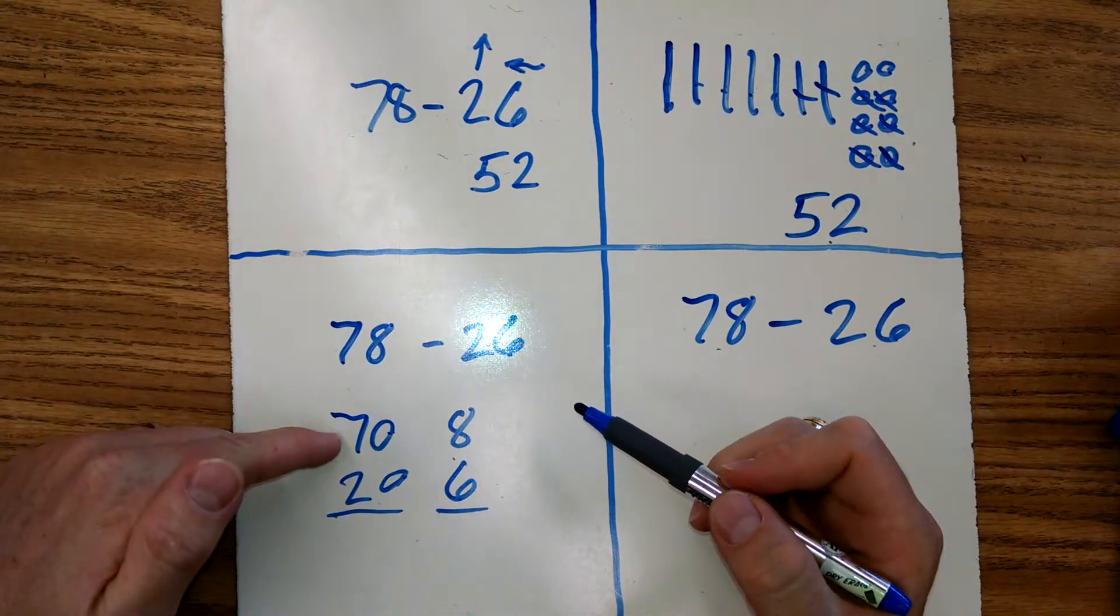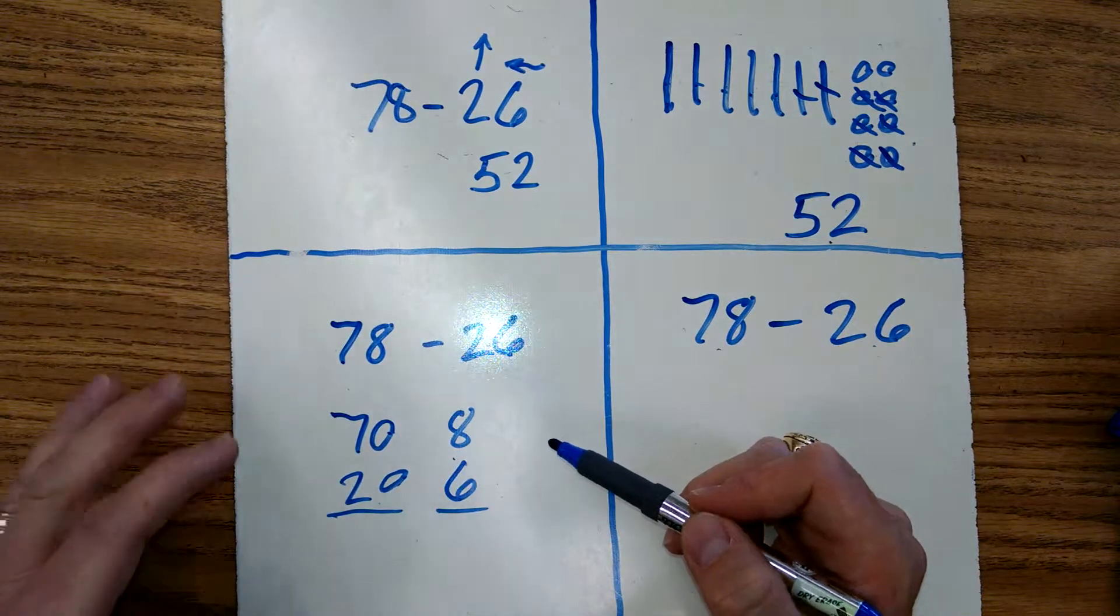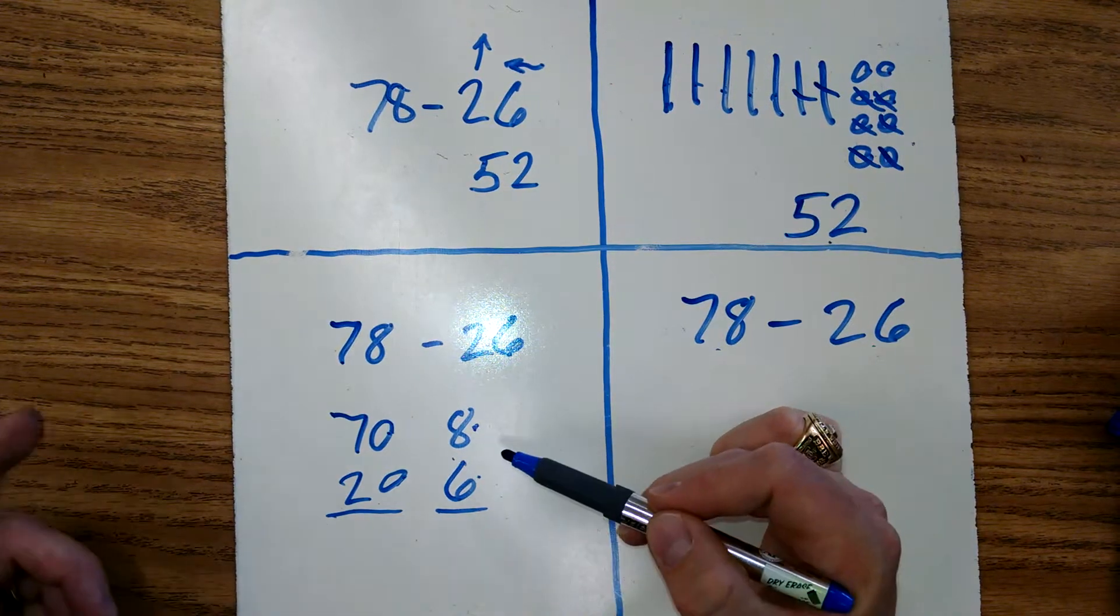Now we're going to subtract. And at this point, we can either start in our tens and take away, or we can start in our ones. As long as we realize when we get to our ones place, we've got to remember that it's always going to be the top minus the bottom on this one.